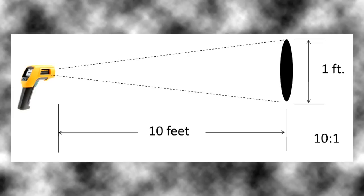The D to S ratio is the ratio of the distance from the IR tool you're using to the surface you're measuring.